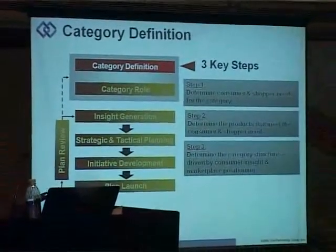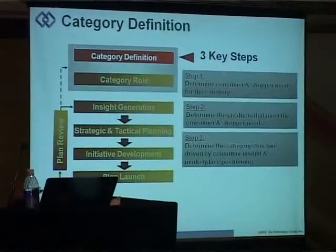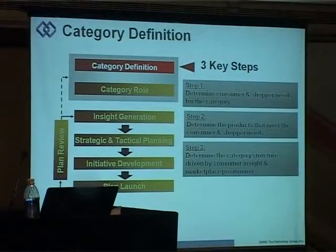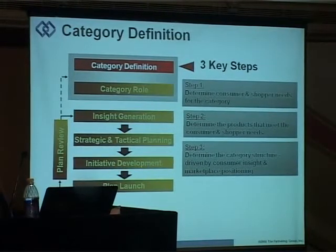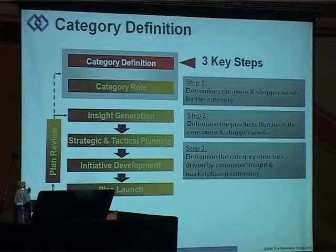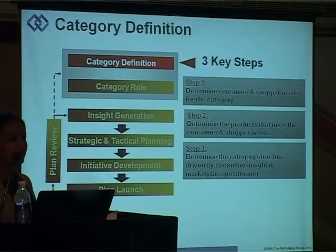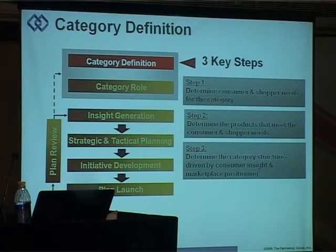Going to the first step of category definition — category definition is a very critical part of the process because you need to define what your customer is looking for, what the needs of your customer are. In that process, we use shopper insight very importantly, because you need to understand what the shopper needs are and then determine what products meet those needs. After that, you need to place and position those products in the right way in the category so your customer can get the value out of that category, and the retailer and supplier get the best results that they are looking for.